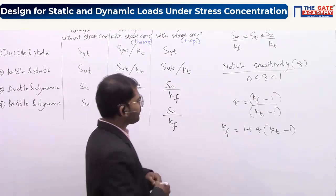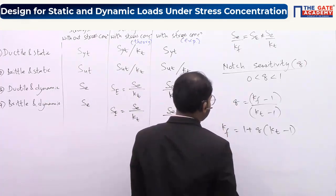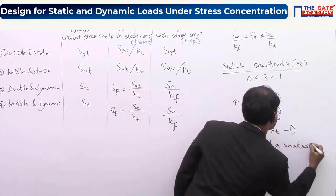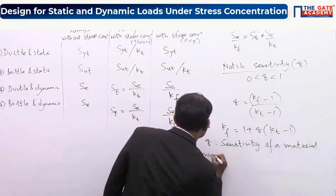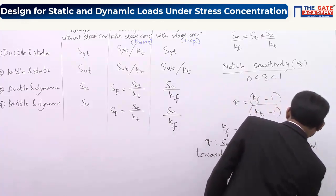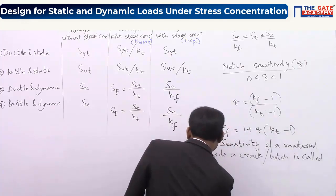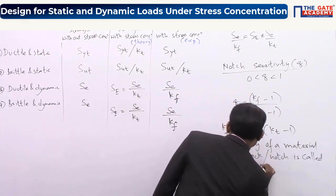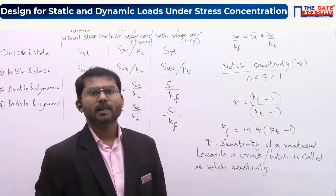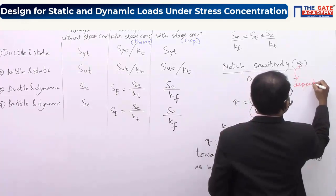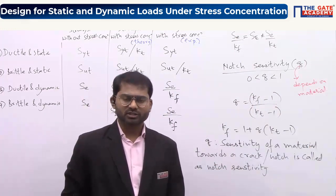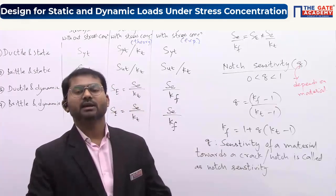Notch sensitivity Q is defined as the sensitivity of a material towards a notch or a crack. It depends only on the material — just like Young's modulus, shear modulus, bulk modulus, Poisson's ratio, density, and thermal conductivity. Q is a material property.